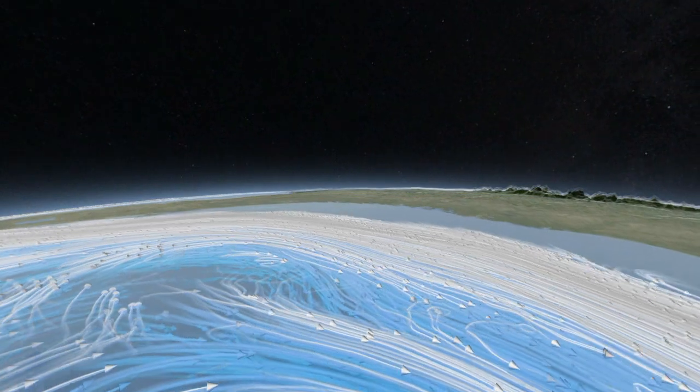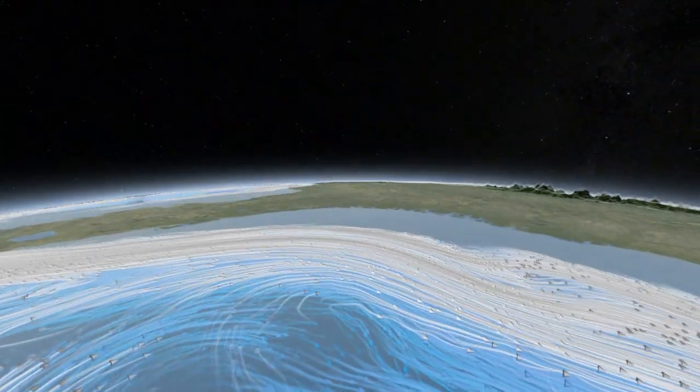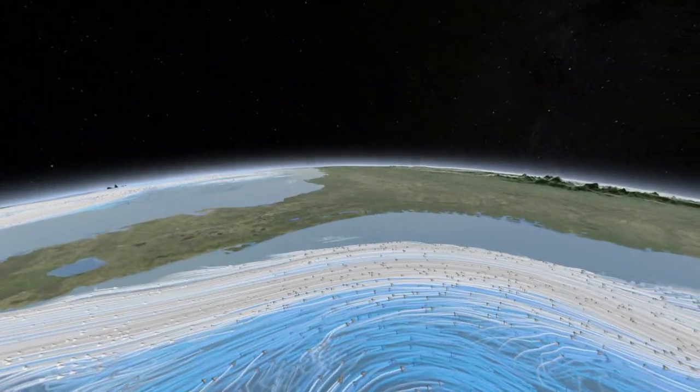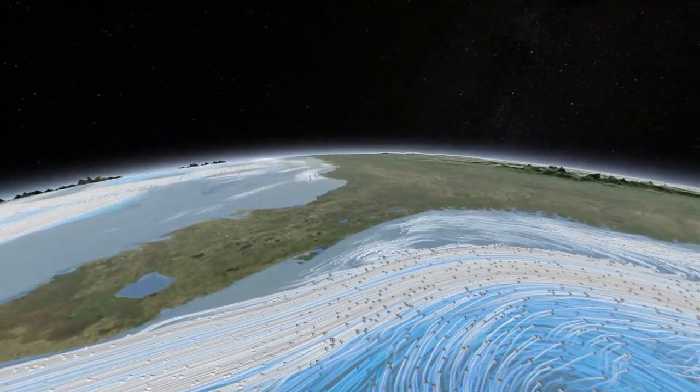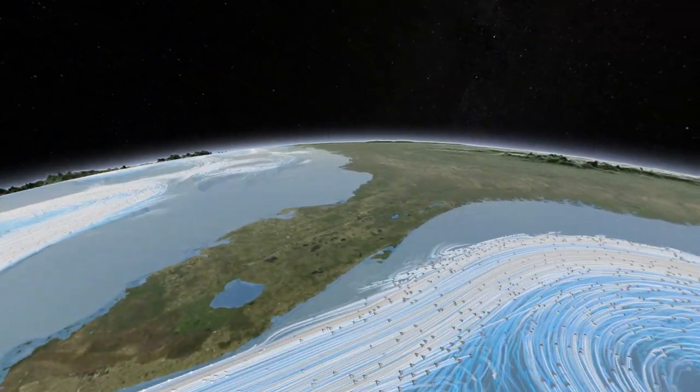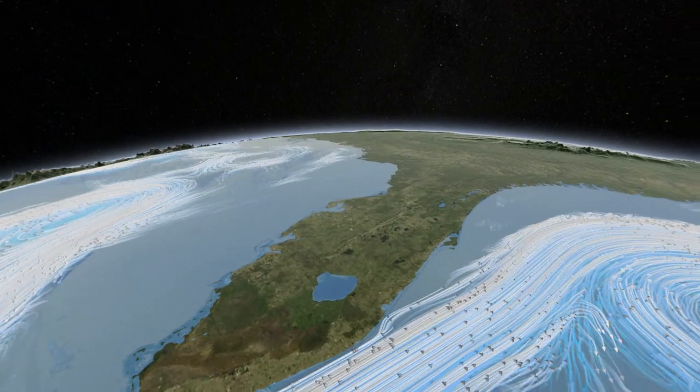Earth's climate engine has countless moving parts: tides and terrain, crosswinds and currents, all working to equalize temperatures around the globe.